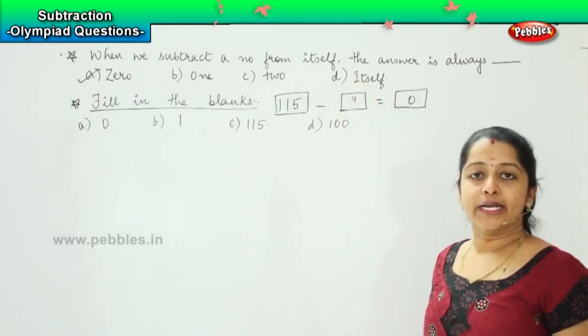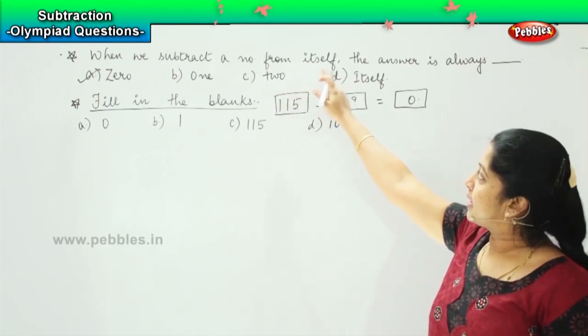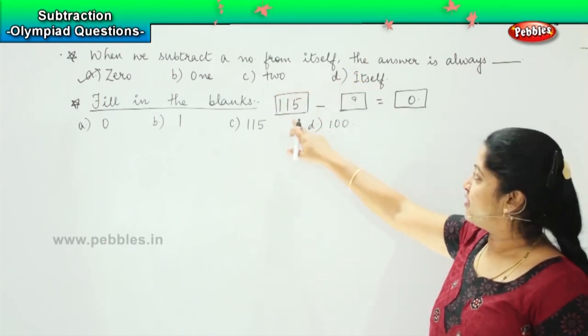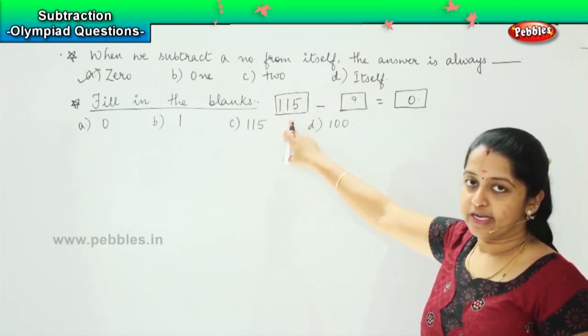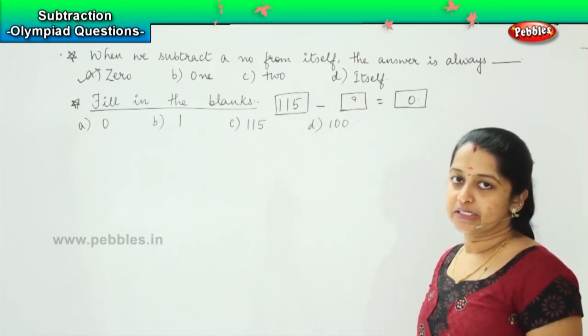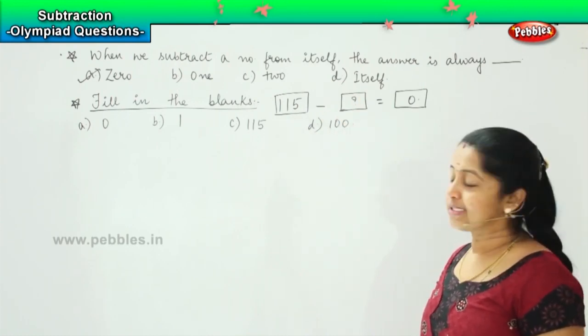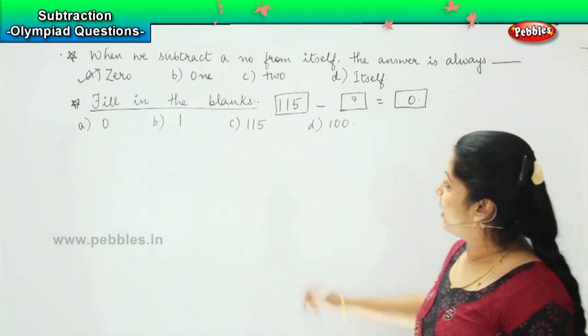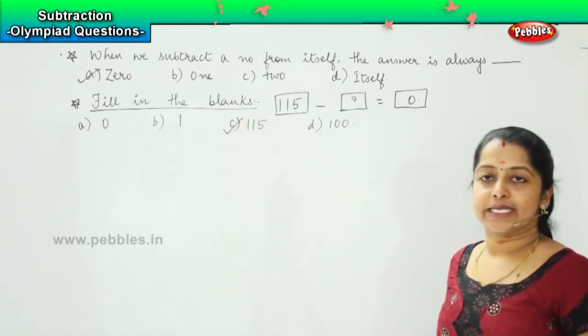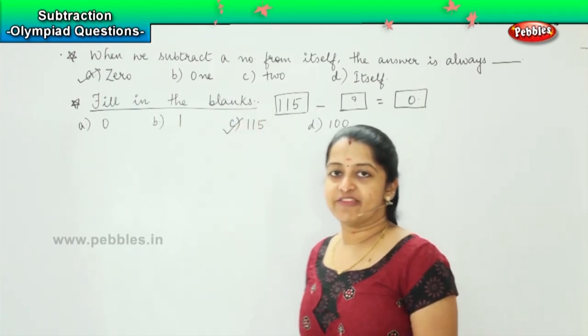This is same as the one we did earlier. When we subtract a number from itself, which means if I subtract 115 from 115, I will be getting an answer 0. So what is the right answer, children? Very good. It is option c. Clear? Shall we move ahead?